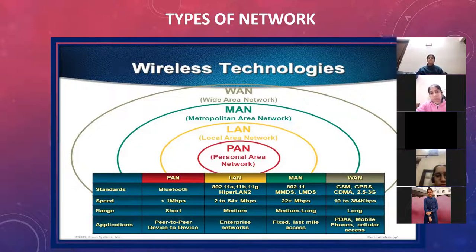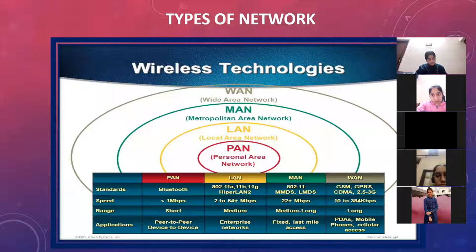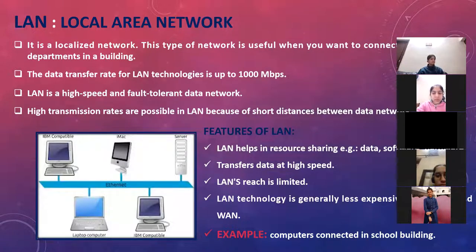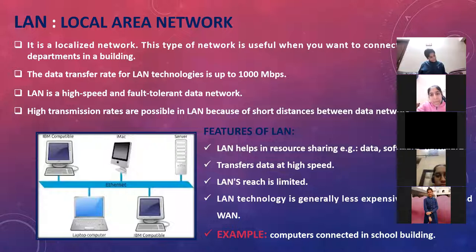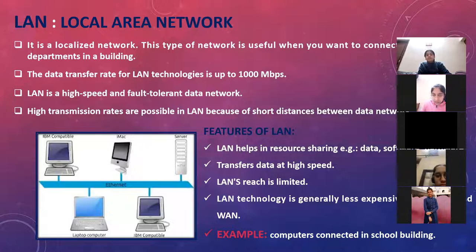PAN is a personal area network — formed between person to person, for example when transferring images from computer to mobile phone or vice versa using a Bluetooth connection, USB cable, or mobile data cable. LAN is local area network — used to connect computers in a single building. It is a high-speed network with data transmission rate up to 1000 megabits per second due to its limited reach.